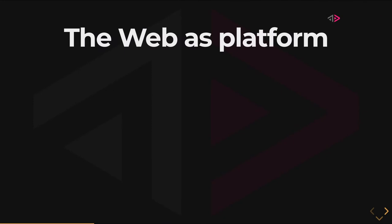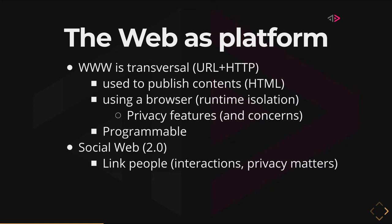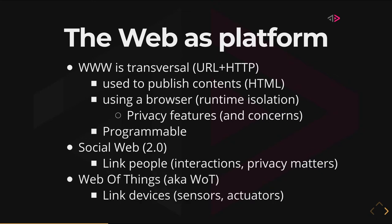I don't want to sacrifice features. It makes sense to use the web as a platform for this, because the web is transversal — you have uniform resource locations and HTTP protocol to share content. Content can be published statically. And then we have extra programs like JavaScript, but it runs in a browser so you have some kind of runtime isolation. We have some privacy features that are part of the web. But there are still concerns because it's programmable. That's a challenge for the social web, since we have interactions between people and privacy matters. There are lots of private conversations you don't want exposed. And it's also critical for the IoT world. So we have the Web of Things working group — we try to link devices together, sensors that provide values, and actuators to control devices.